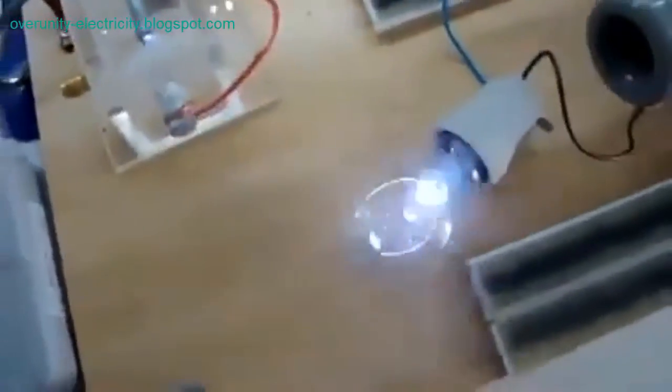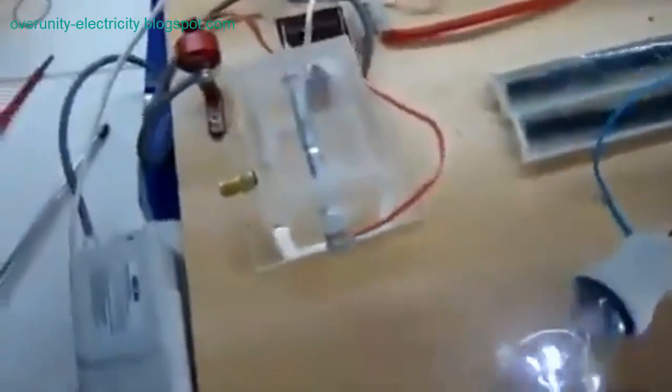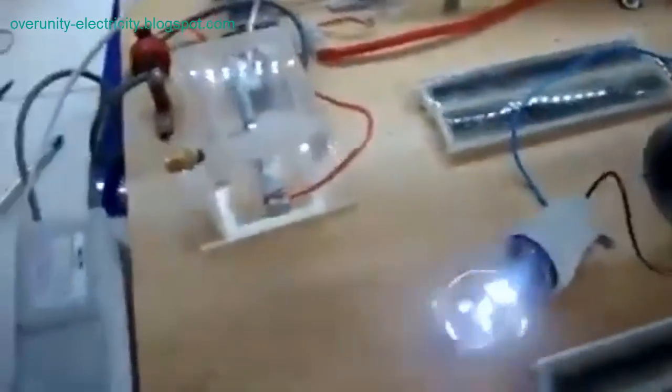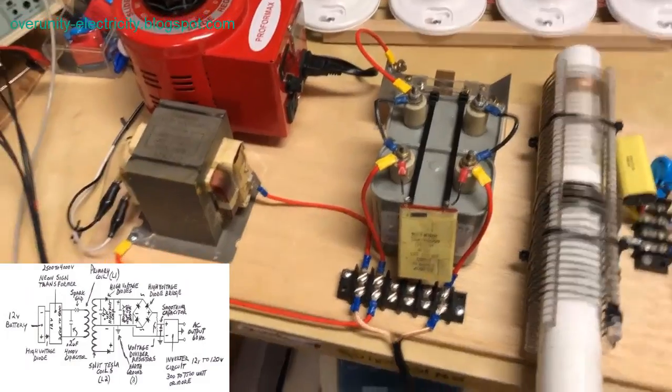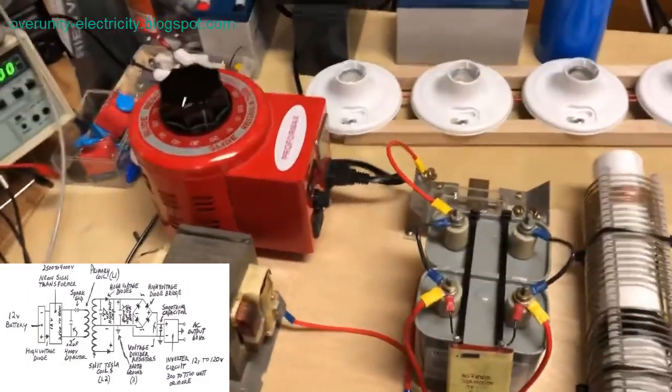Variation of Tesla coil. HTTPS colon slash slash overunity-electricity.blogspot.com slash p slash Smith-magnetic-generator.HTML.